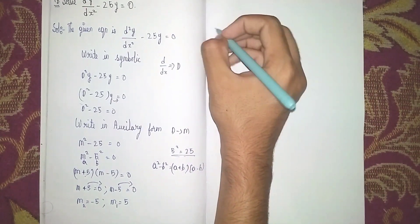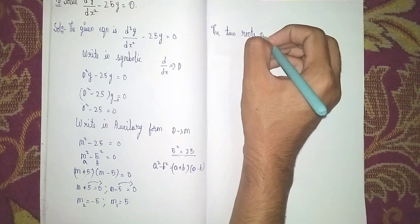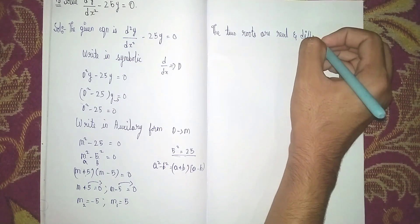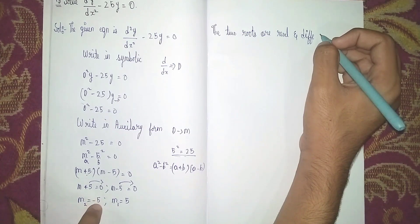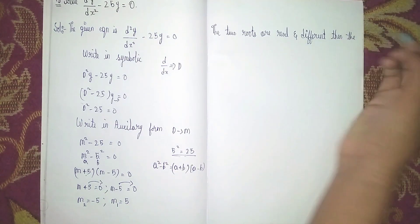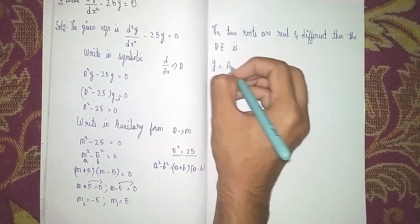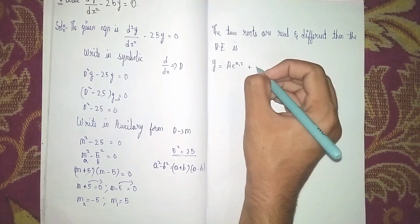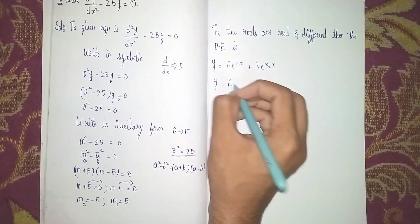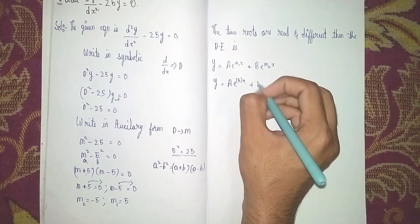The two roots are real and different. Since they are real and different, the general solution is y equals A·e^(m₁x) plus B·e^(m₂x). Substituting m₁ equals 5, this becomes y equals A·e^(5x) plus B·e^(m₂x).